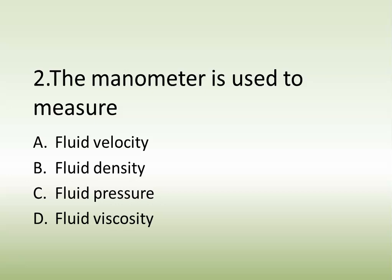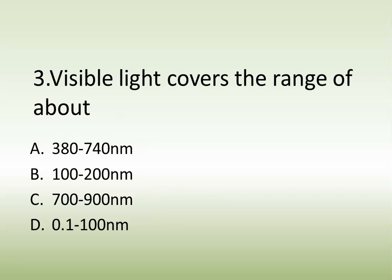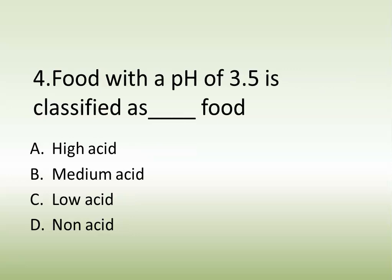Question number three: visible light covers the range of about. Options are: 380 to 740 nanometer, 100 to 200 nanometer, 700 to 900 nanometer, or 0.1 to 100 nanometer. The correct answer is option A: 380 to 740 nanometer.